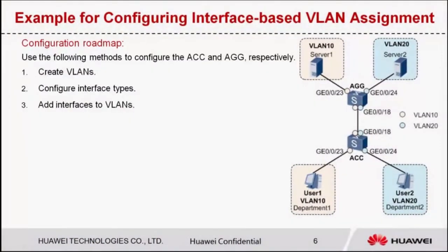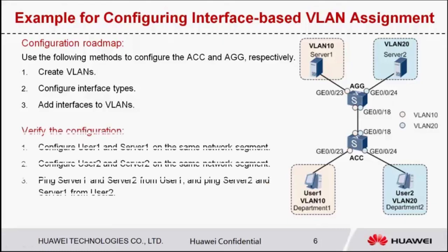Let's look at the configuration roadmap. The configuration is simple — we only need to perform the following steps on both the ACC and AGG: one, create VLANs; two, configure interface types; three, add interfaces to VLANs. After the configuration is complete, perform the ping operation to check whether the configuration is correct.